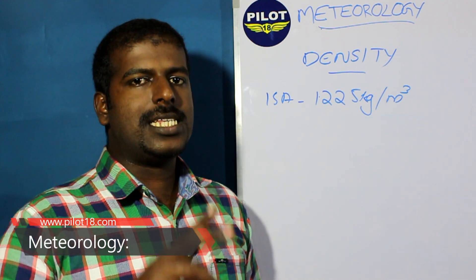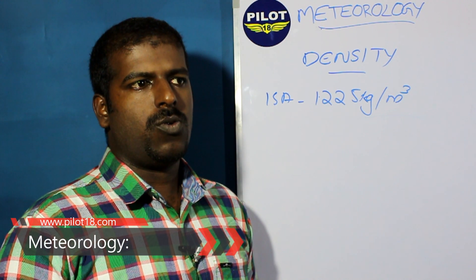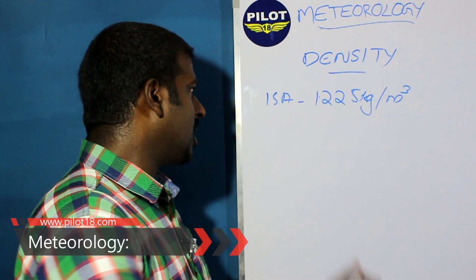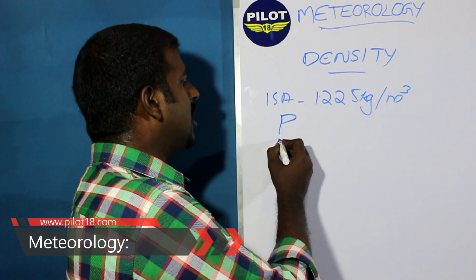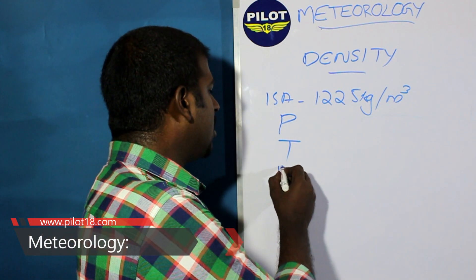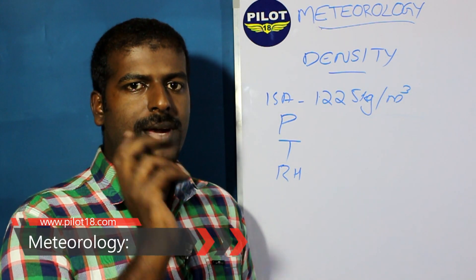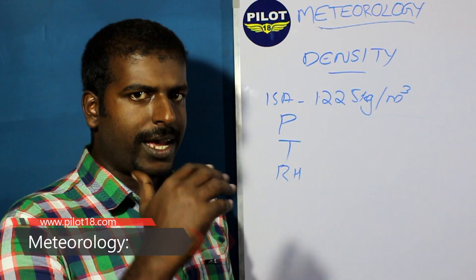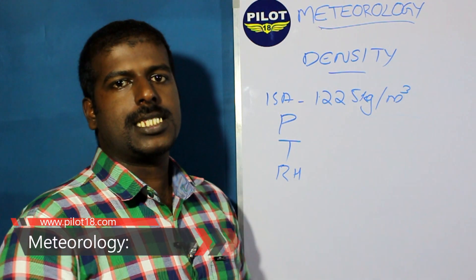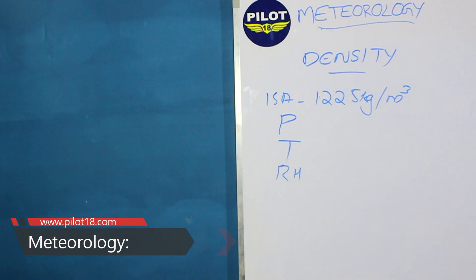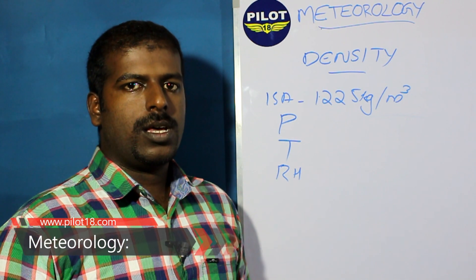There are three main factors which can change density: pressure, temperature, and humidity. When pressure is increased, the amount of gas in that unit volume will also increase because there is more pressure, so density also increases.